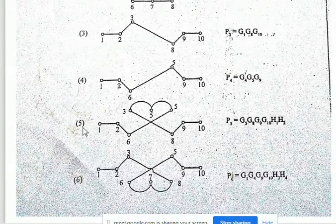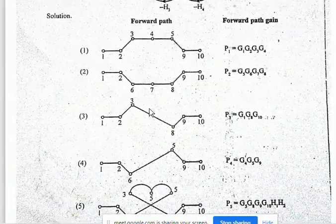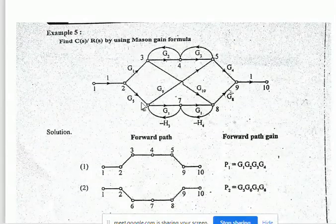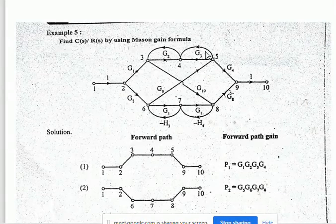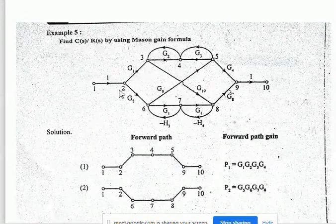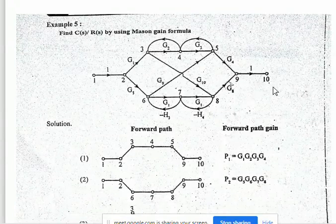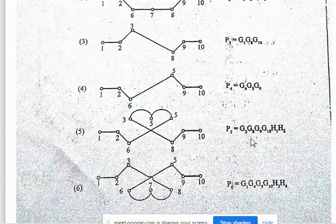Another forward path P5: 1 to 2, 2 to 6, 6 to 5, 5 to 4, 4 to 3, 3 to 8, 8 to 9, and 9 to 10.